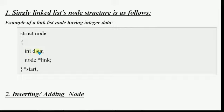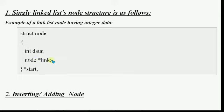The structure has two parts: one is 'int data' for storing the data value. If we want to store multiple data, we can create multiple variables in the data part — for example, int roll, name, float marks. But for the link part, there will be only one pointer called 'next', which stores the address of the next node.